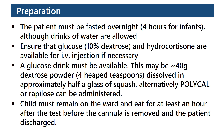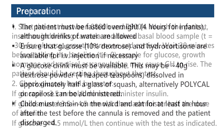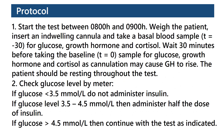Alternatively, polycal or rapylose can be administered. The child must remain on the ward and eat for at least an hour after the test before the cannula is removed and the patient discharged. Protocol: start the test between 8 and 9 am. Insert an indwelling cannula and take a basal blood sample for glucose, growth hormone and cortisol. Wait 30 minutes before taking the baseline sample for glucose, growth hormone and cortisol, as cannulation may cause growth hormone to rise.